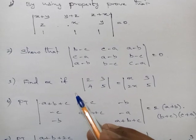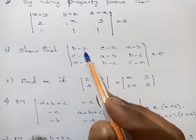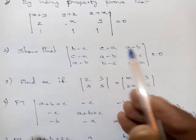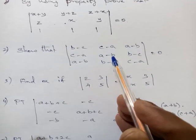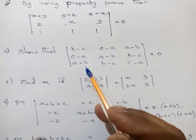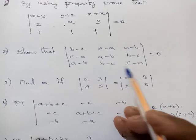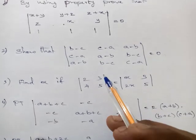Now see the next problem. Show that the determinant with rows (b−c, c−a, a−b), (c−a, a−b, b−c), (a−b, b−c, c−a) is equal to 0.